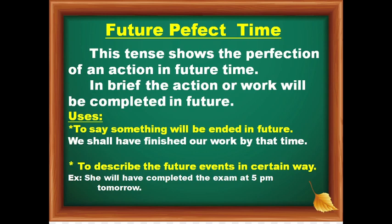How can we use this tense in our daily life? First use: to say something will be ended in future. For example, 'We shall have finished our work by that time,' or 'We shall have finished that work at 6 a.m.' Second use: to describe future events in a certain way. If you want to describe future events or actions, or even your planning. For example, 'She will have completed the exam at 5 p.m. tomorrow.' This is the way how you can use this tense.